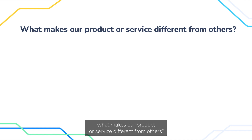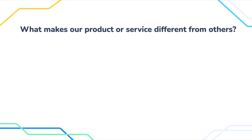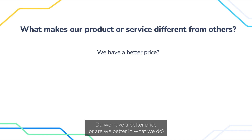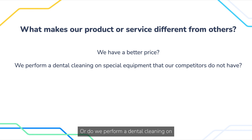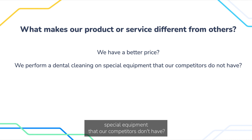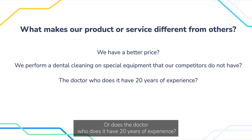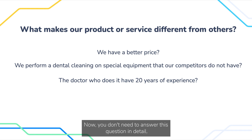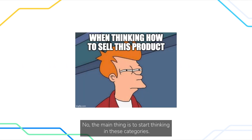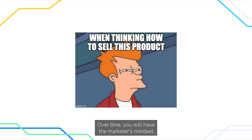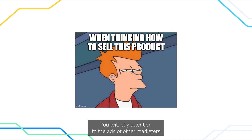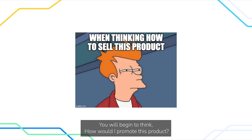One of the most critical questions is: what makes our product or service different from others? Why should people buy from us rather than from a competitor? Do we have a better price, or are we better at what we do? Do we perform dental cleaning on special equipment that competitors don't have? Or does the doctor have 20 years of experience? You don't need to answer this in full detail right now — the main thing is to start thinking in these categories. Over time you will develop the marketer's mindset. You will look at products differently, pay attention to other marketers' ads, and begin to think: how would I promote this product?